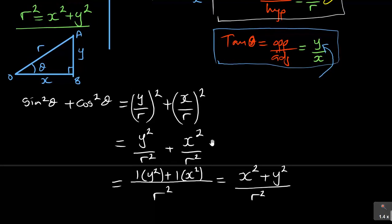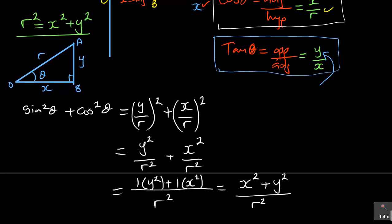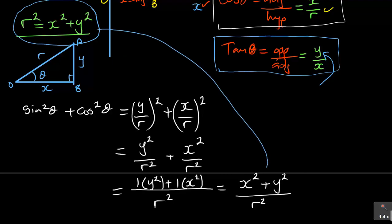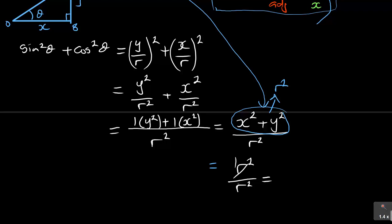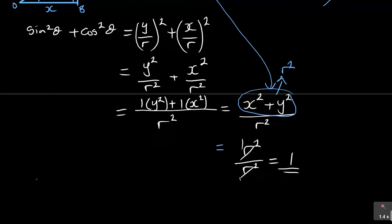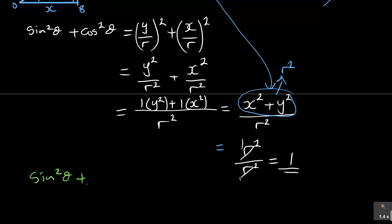Now, going back to the Pythagoras theorem, we said R² = x² + y². So X² + Y² can be substituted with R², giving us R² over R², which equals 1. Therefore, we can conclude that sin²θ plus cos²θ is equal to 1.